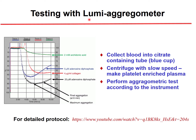For the Lumi aggregometer, blood is collected into a citrate-containing tube (the blue tube in the lab), then platelet-enriched plasma is prepared by slow-speed centrifugation. Aggregation tests are then performed using different agonists that stimulate the platelets through different systems.